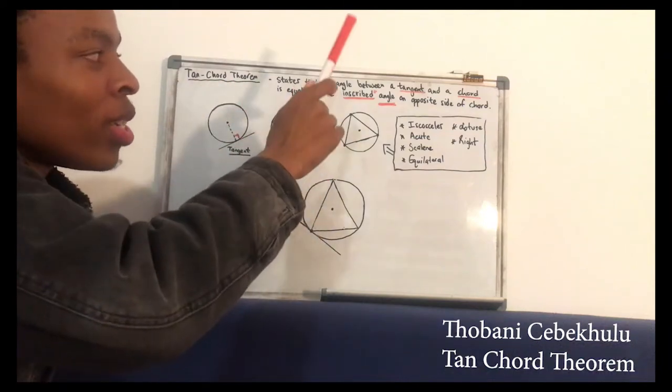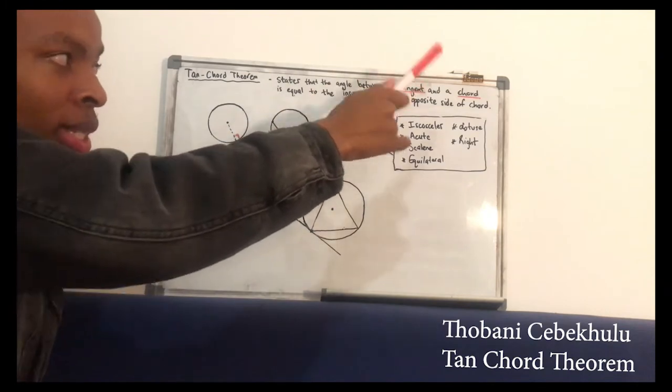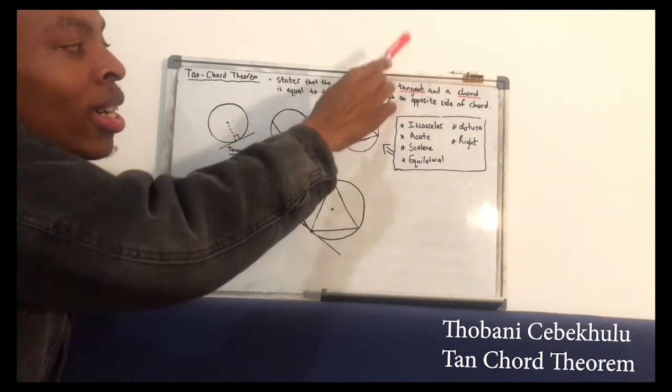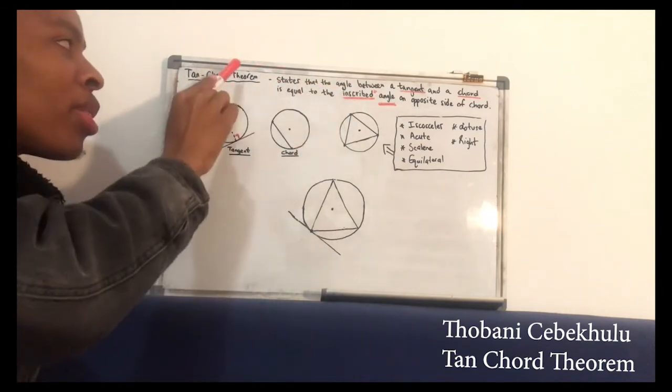The Tan Chord Theorem states that the angle between a tangent and a chord is equal to the inscribed angle on the opposite side of the chord. Understanding the underlined words in this definition is very important in understanding the actual theorem.